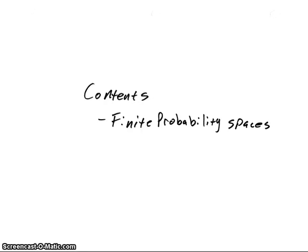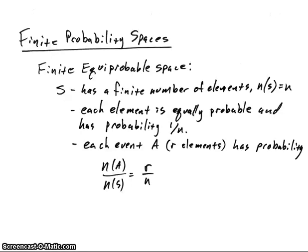In this video we're going to look at finite probability spaces. There are really two types of finite probability spaces we're going to look at. The first one will be finite equi-probable spaces, and the second one will just be general finite probability spaces.